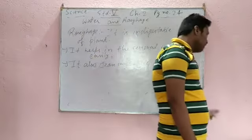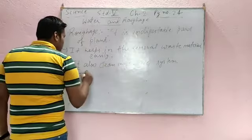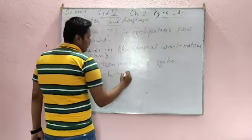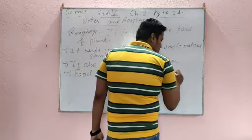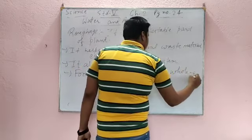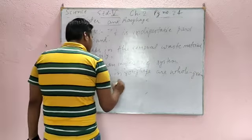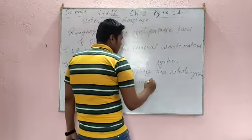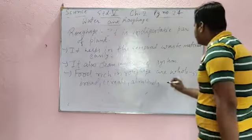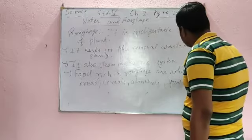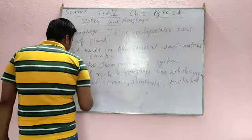Now food rich in roughage are whole grains and cereals, almonds, fruits, and vegetables.